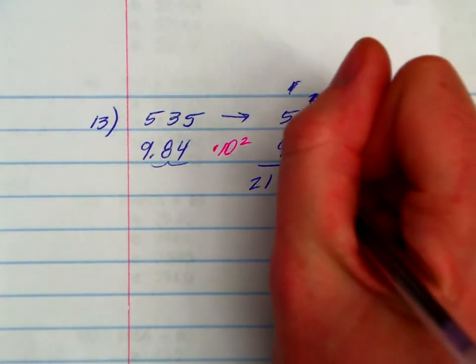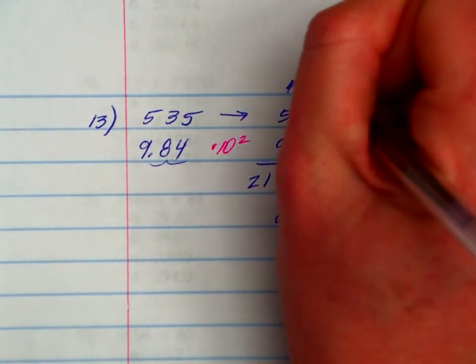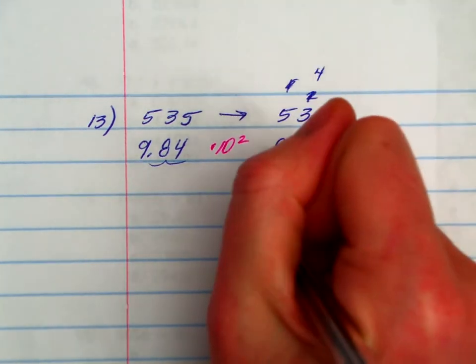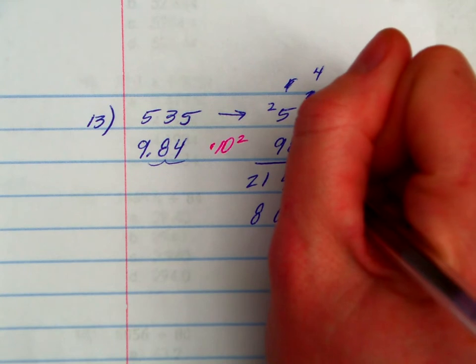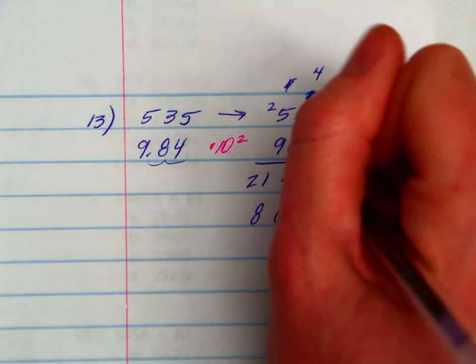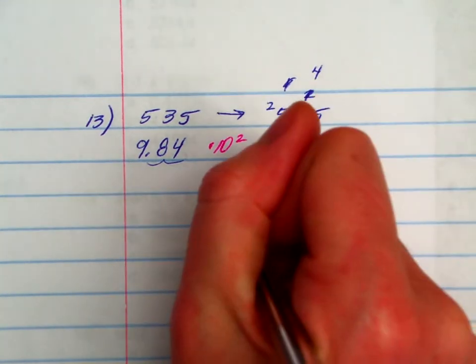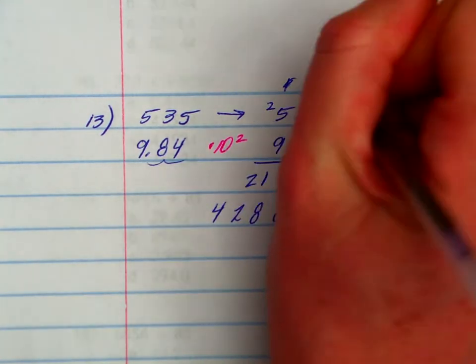Placeholder. 8 times 5, 40. 8 times 3, 24, plus 4 would be 28. Put down the 8, carry the 2. 8 times 5 is 40, plus 2, 42. Finished with my 8. Cross those out.